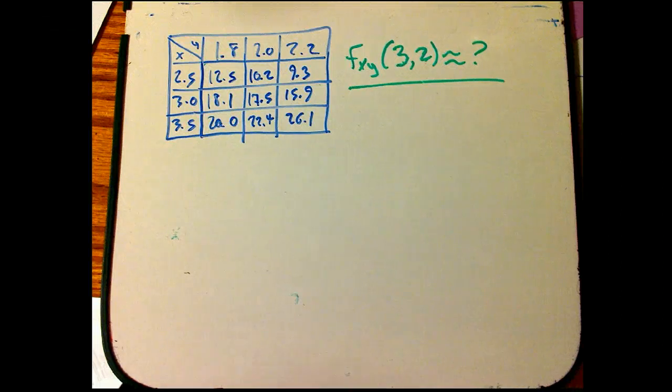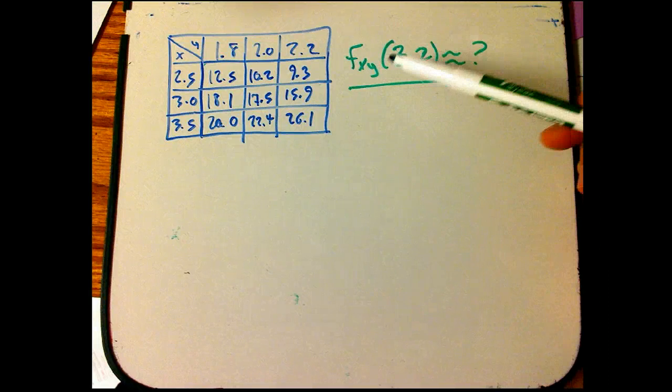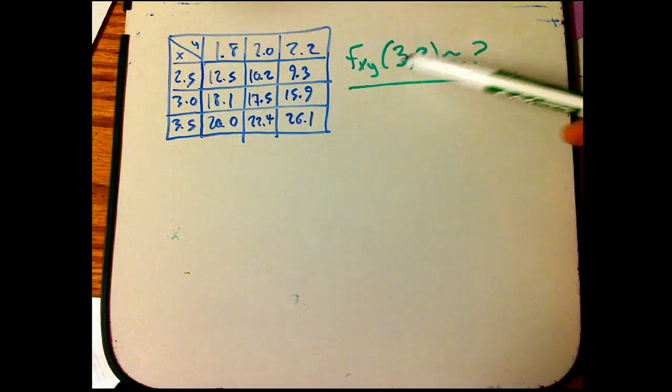Let's look at this problem from Stuart about a tabular approximation to a mixed partial. So we want to eventually find the mixed partial fxy at (3,2).